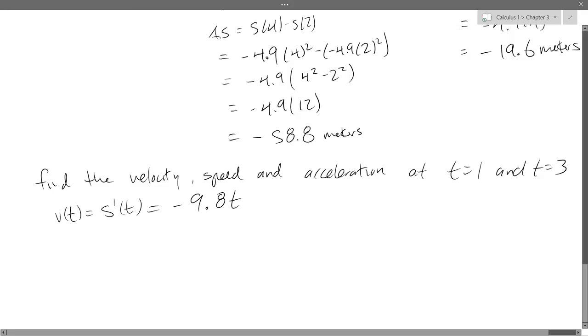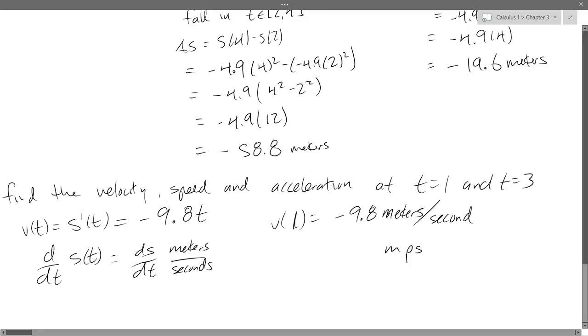Now I want to know at time 1 and at time 3. So v of 1 is negative 9.8. The units we're in, we're still in meters. But you can think of s prime as the t derivative of s. So s is in meters and t is in seconds. So this is really ds dt. We have meters on the numerator, seconds in the denominator. So this is meters per second.